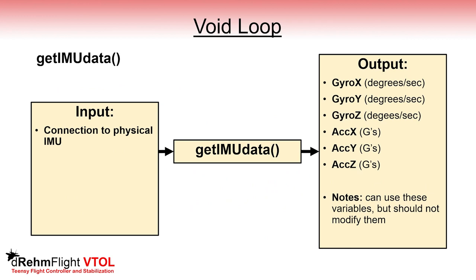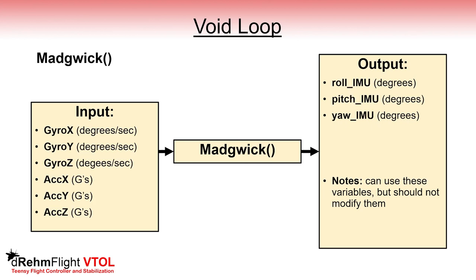The next function called in the void loop is the get IMU data function. This function retrieves and updates the gyro and accelerometer measurement variables. If you need these values for a calculation, you can use them but do not modify them. Also note that these values are slightly pre-processed with a low pass filter to reduce high frequency noise. Next we call the Madgwick function which takes the IMU measurement variables and updates the roll IMU, pitch IMU, and yaw IMU variables — these are absolute measurements of the flight controller's orientation in degrees. They may be used in any line of code you write but should not be modified outside of the Madgwick function.